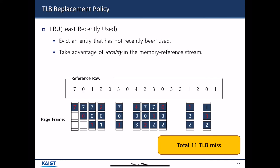The number of entries in TLB is limited — 32, 64, or 128. When a process generates a TLB miss, we have to bring in a new TLB entry, and in most cases we have to evict some existing TLB entries to accommodate the new one. So we need some type of replacement policy.